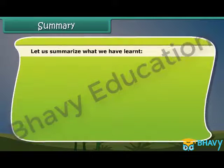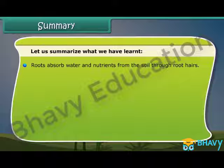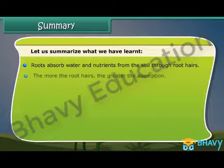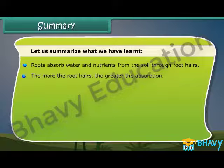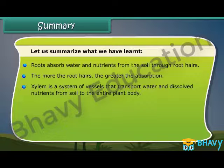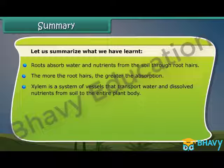Let us summarize what we have learned. Roots absorb water and nutrients from the soil through root hairs. The more the root hairs, the greater the absorption. Xylem is a system of vessels that transports water and dissolved nutrients from the soil to the entire plant body.